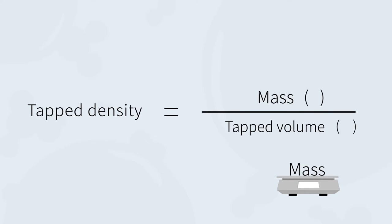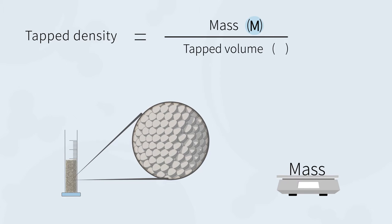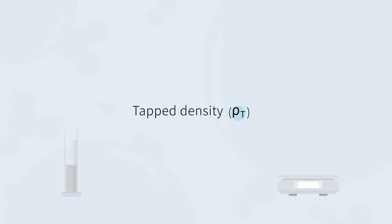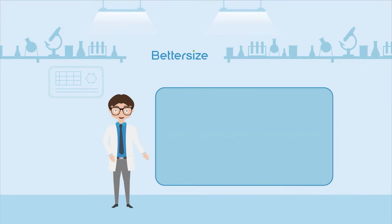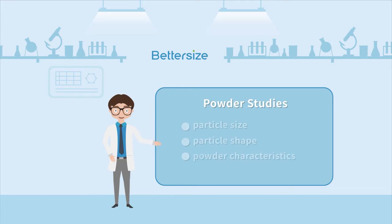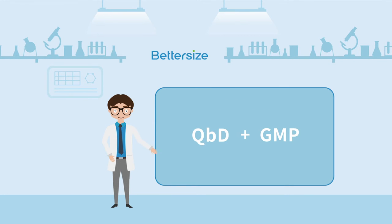Mass can be determined by a scale while the tapped volume is achieved after tapping the powder for a certain time. The tapped density is a fundamental physical characteristic in powder studies. Most industries highly depend on the tapped density measurement to improve their quality by design and good manufacturing practice.